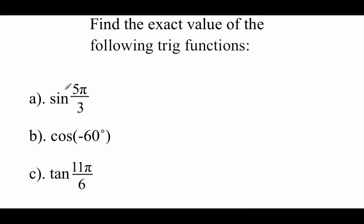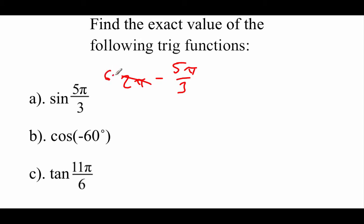Taking a look at a couple more examples. First one, we're doing the sine of 5π over 3, so I'm going to find that reference angle again. This one is actually a fourth quadrant angle, so it's really close to 2π, so I'm going to take 2π minus 5π over 3. We're going to need common denominators, so 2π is like 6π over 3, so we end up with a π over 3 reference angle.